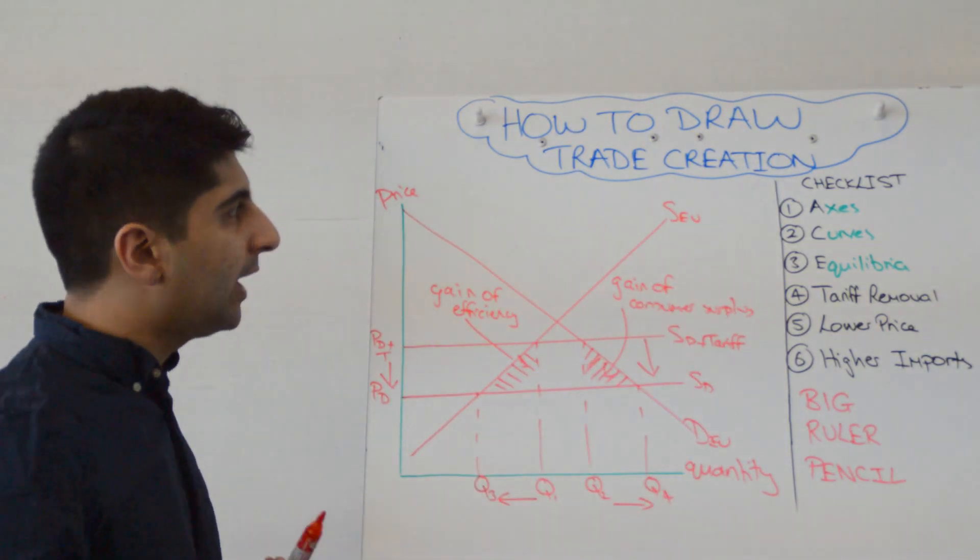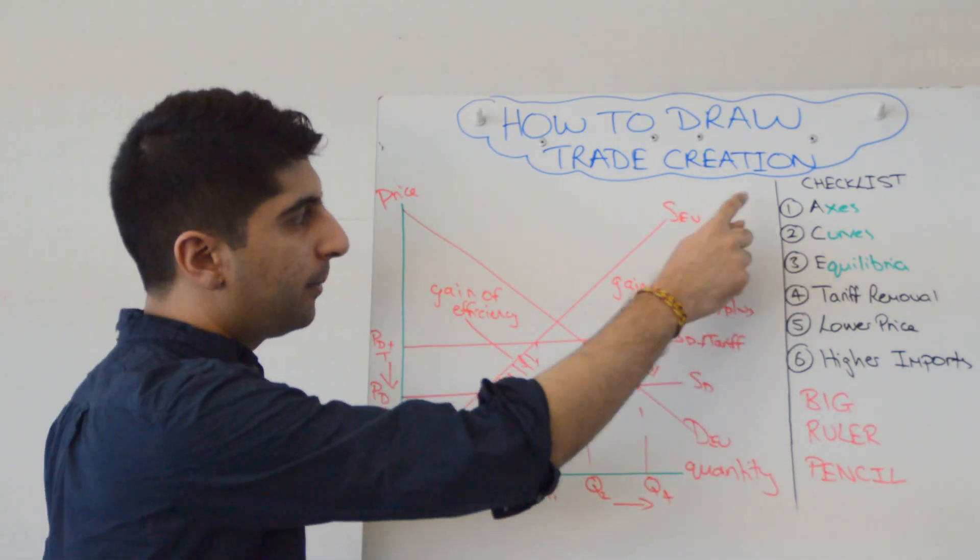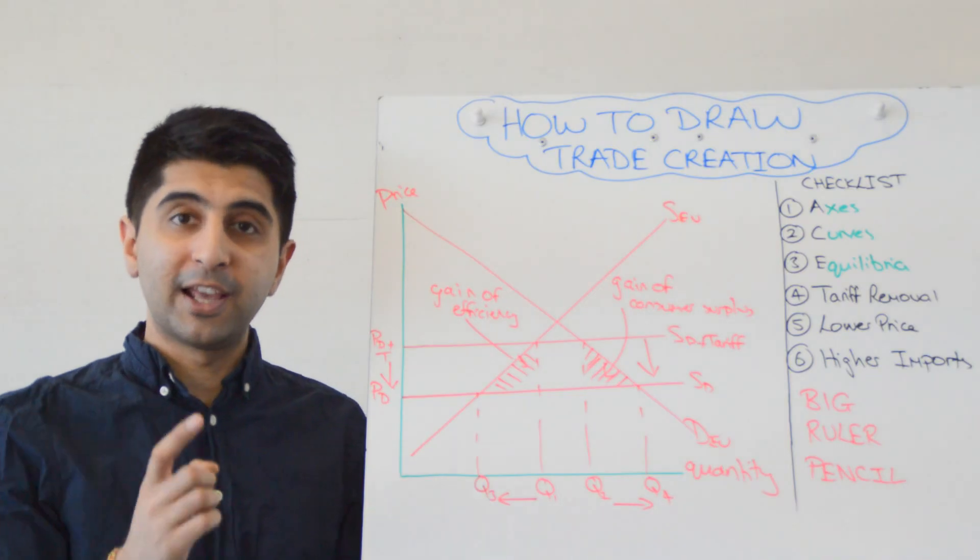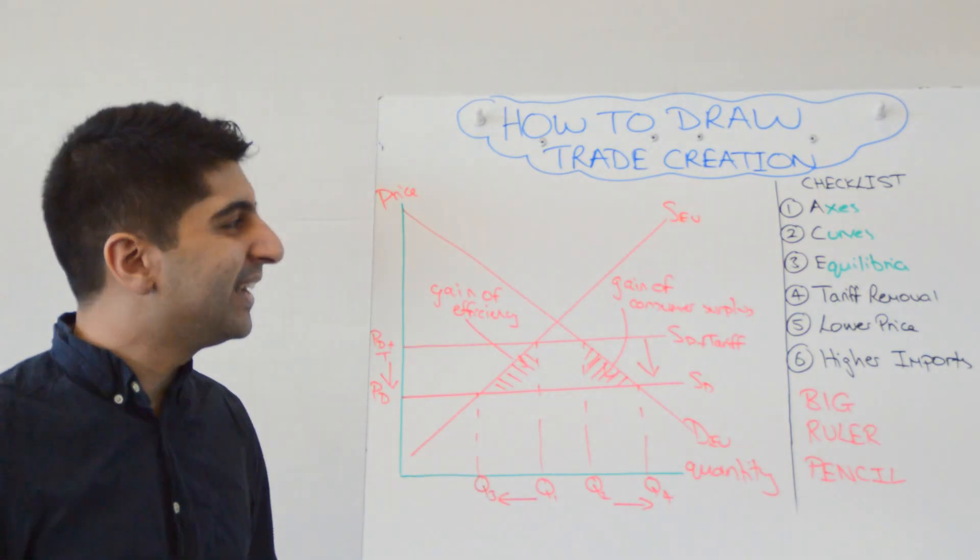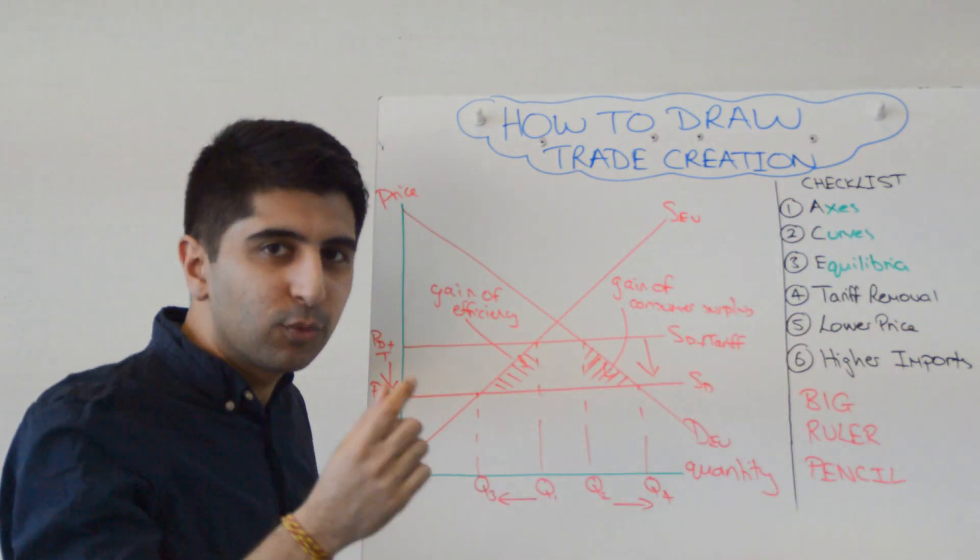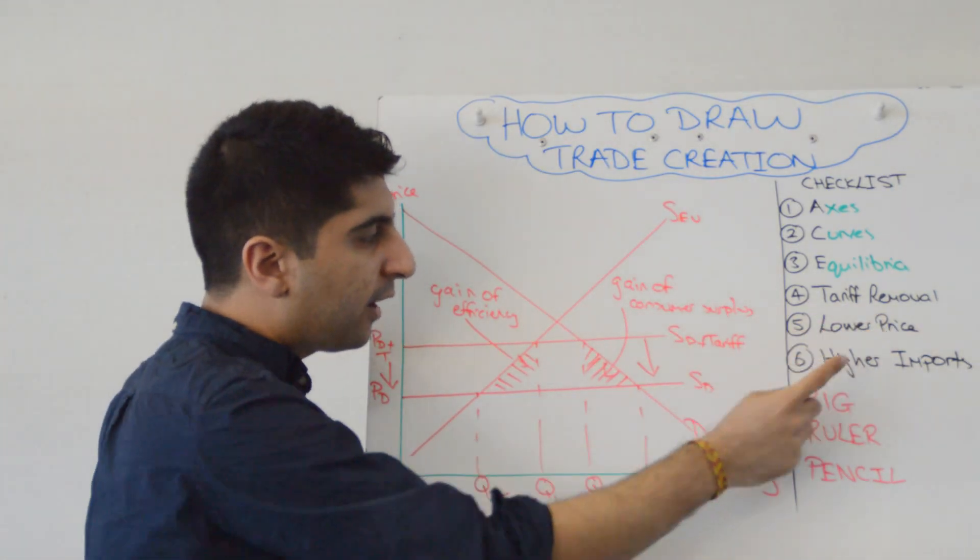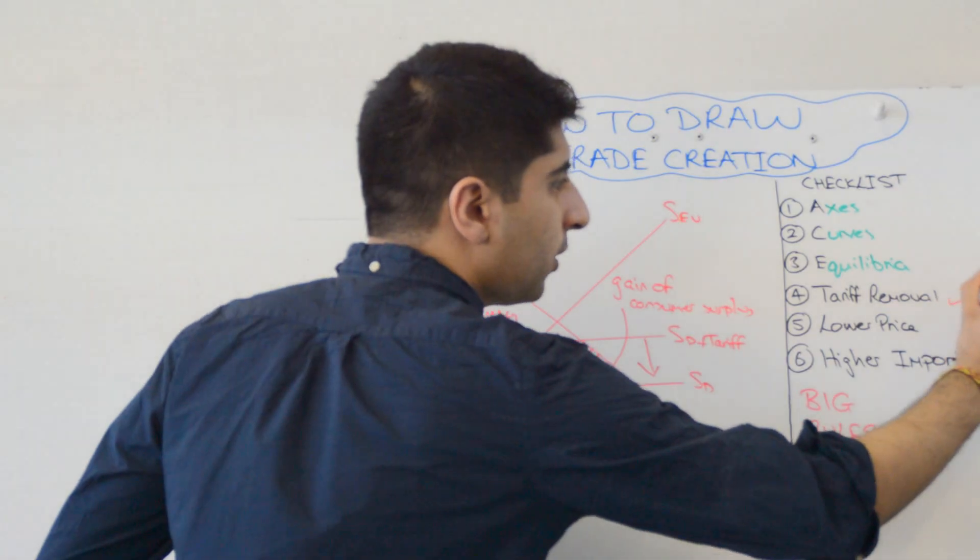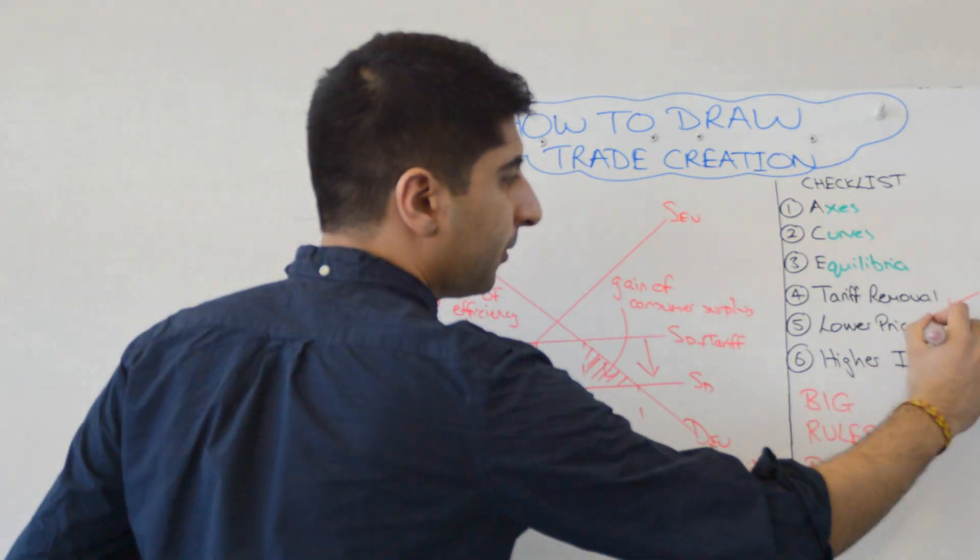So let's go to our checklist. Have we labeled our axis? Yes, we have. Have we labeled all of our curves? Beautifully done. Have we labeled all of our equilibrium, relevant equilibrium? Yes, we have. It looks stunning, doesn't it? Next, in our checklist, what were we trying to show? We were trying to show a tariff removal. Have we shown that? Yeah, absolutely we have. Have we shown a lower price as a result of this tariff removal? Absolutely.